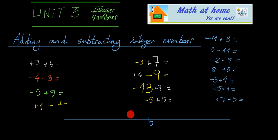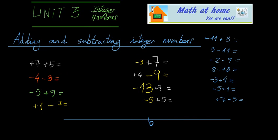For example, plus 7 plus 5. Every time we have a positive number, like plus 7, we interpret this as moving to the right — to the positive side of the number line — 7 steps or 5 steps. So this operation is 7 steps to the right on the number line, and later 5 steps, and then you get to plus 12. The solution is plus 12.